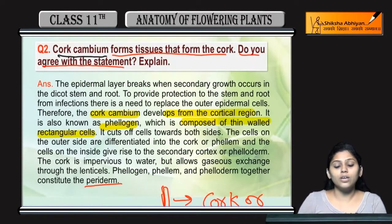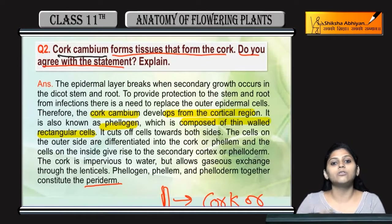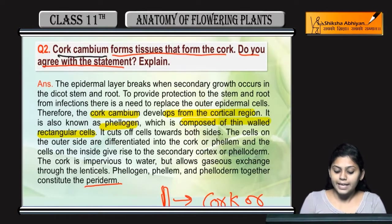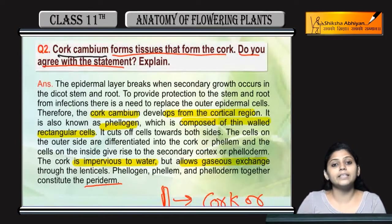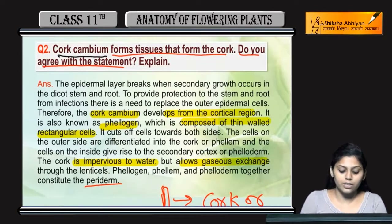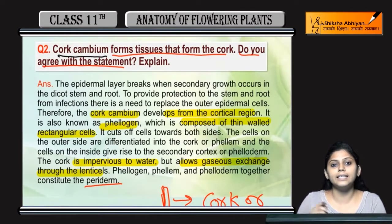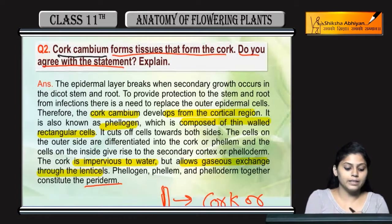The cork is present on the outer side of the plant. Its function is that it is actually impervious to water — it does not allow water to enter inside — but it allows gaseous exchange through the lenticels. Lenticels are small pores present on the bark of the plant.